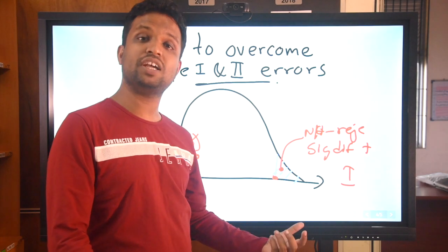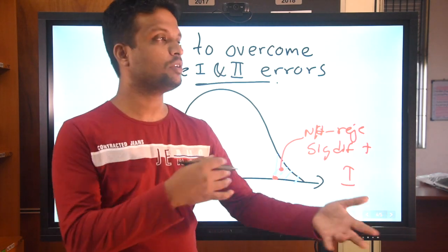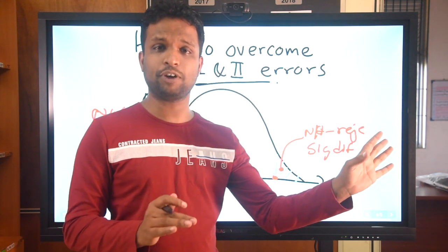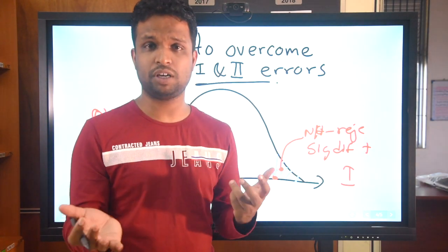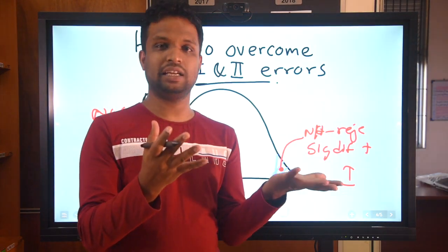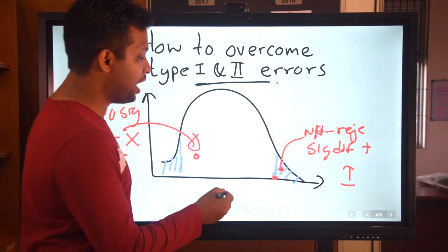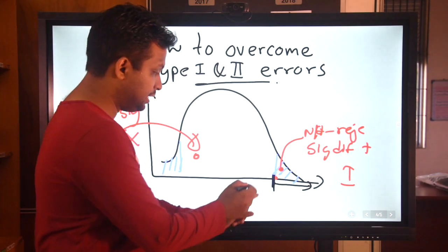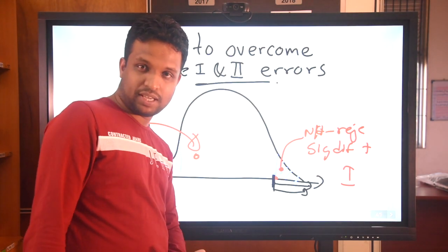In the 5% rejection region, assume that we are getting many samples with Type 1 error — we conclude there is a significant difference, but in general they are not significantly different. For example, comparing Type 1 diabetes versus Type 2 diabetes: the clinical manifestation is not significantly different, but statistical testing shows a significant result. In order to minimize that, you have to change this cutoff value and push the rejection region further towards the tail. There is no other way to minimize Type 1 error.